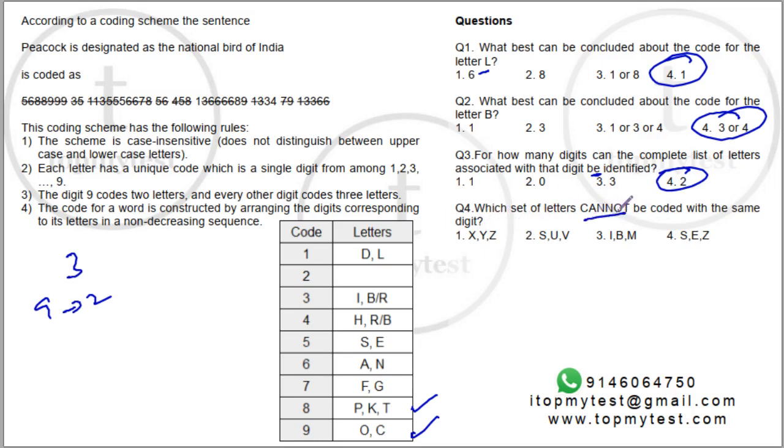Which set of letters cannot be coded with the same digit? Okay. Now X, Y, Z, we don't have any X, Y, Z here. And all 3 of them can take 2. So it is possible that they take 2. S, U, and V. We already know S is 5. Now if I put U and V also as 5, there will be 4 letters which will be coded by 5. Because E is also coded by 5. So this is not possible.